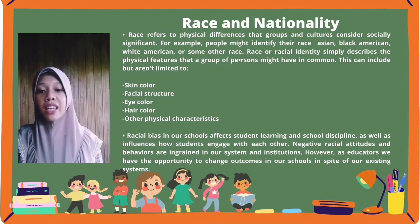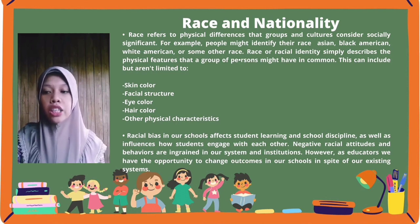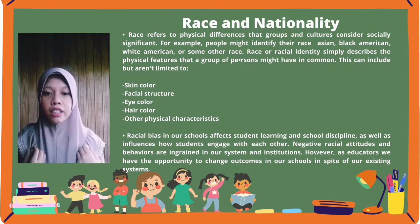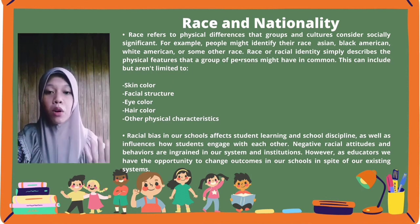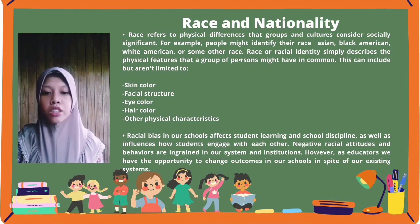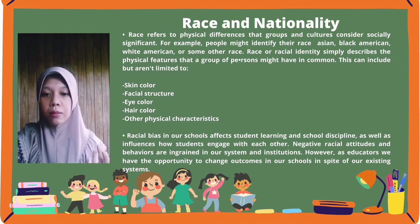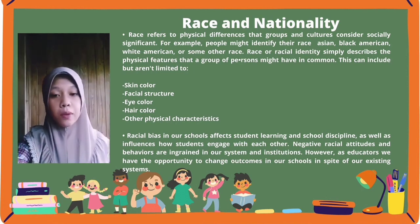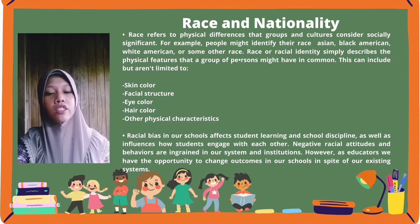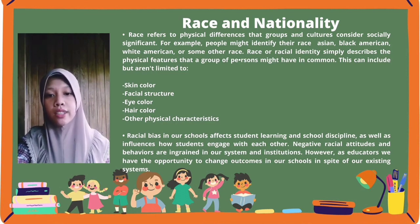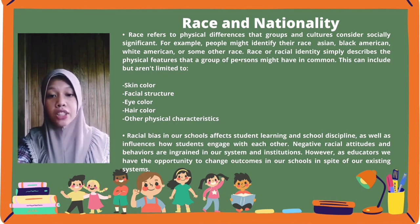But of course, we should be clear about whether we are referring to a racial group. For example, a student wearing a hijab might be assumed to be Moro — and we should be careful because that can already be a racist assumption. Racism is learned behavior where we are socialized to see patterns and act upon them. It causes challenges for learning and school experience. Racial bias in schools affects student learning and discipline, as well as how students engage with each other. Negative racial attitudes and behaviors are ingrained in our systems and institutions.